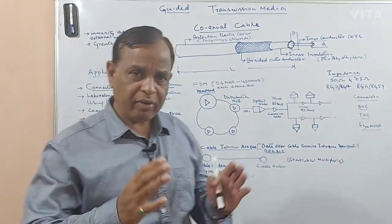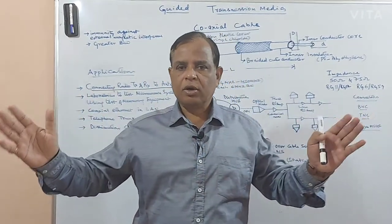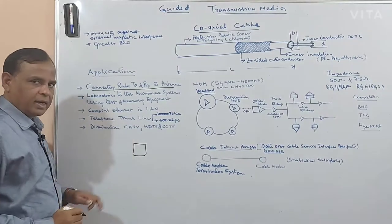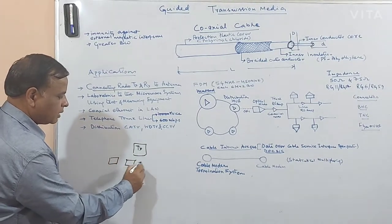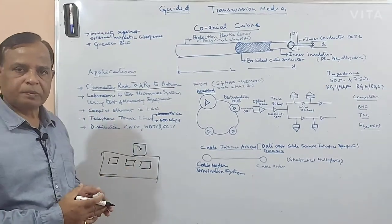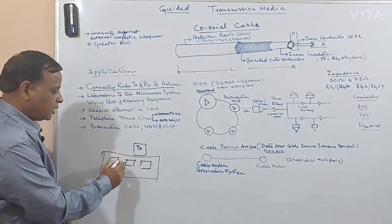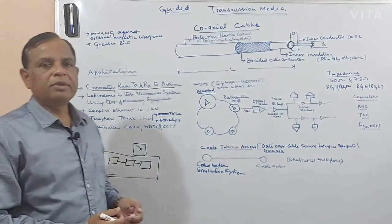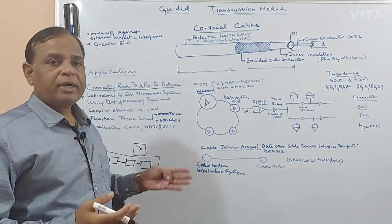Even in a transmitter, a series of stages will be there — this whole thing becomes part of a transmitter system with a number of devices involved. If you want to connect from one device to the next device, you use a coaxial cable. From this device to this device, the signal travels like this — so the coaxial cable's application is vital throughout.